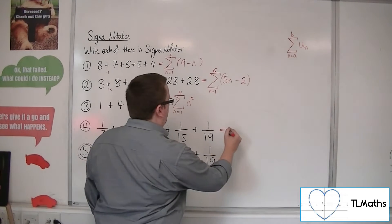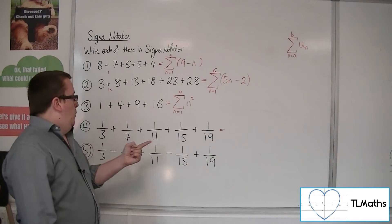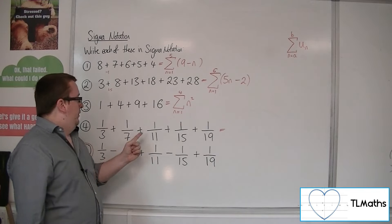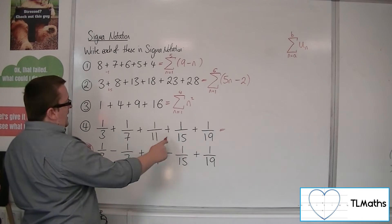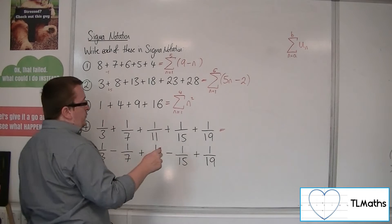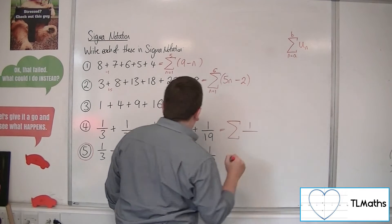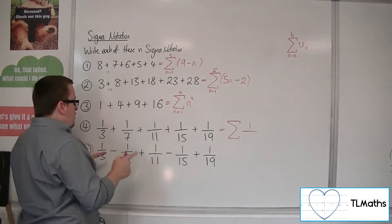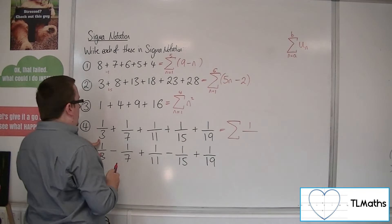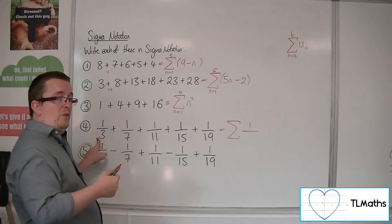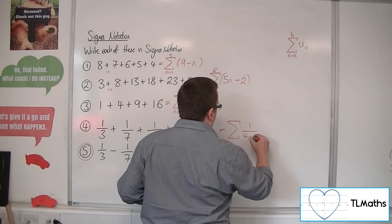Now number 4. Be aware that we've got this sequence in the denominator. So we've got 3, 7, 11, 15, 19. The numerators are all staying the same. So they're all 1 over. Now the denominator will appear to be going up in 4s. And how do we get from 4 back to 3? We've got to subtract 1. So 4n minus 1.